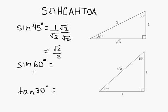Now sine of 60 degrees. 60 degrees is right here in the top triangle. Sine again is opposite over hypotenuse.